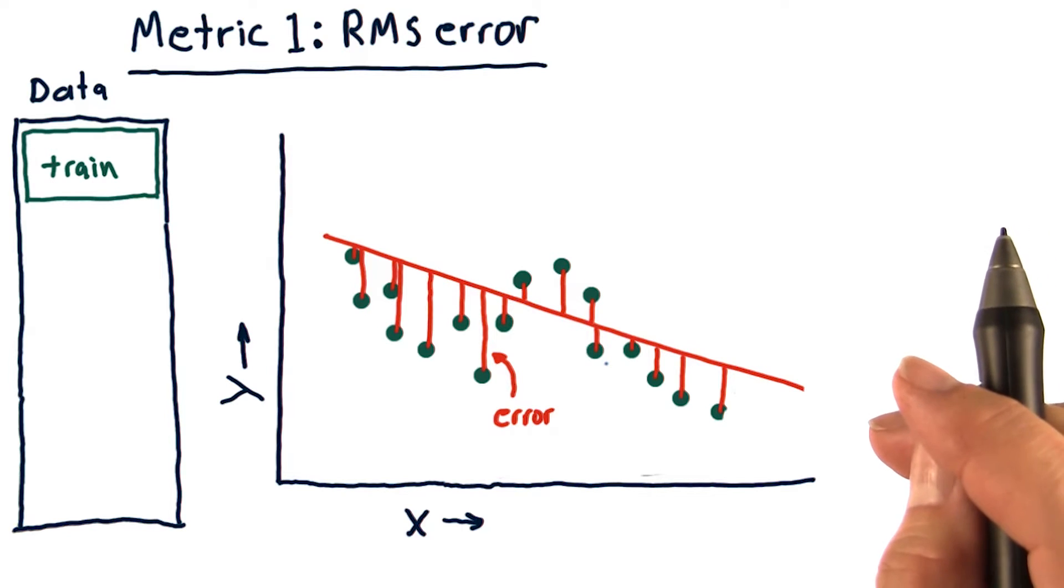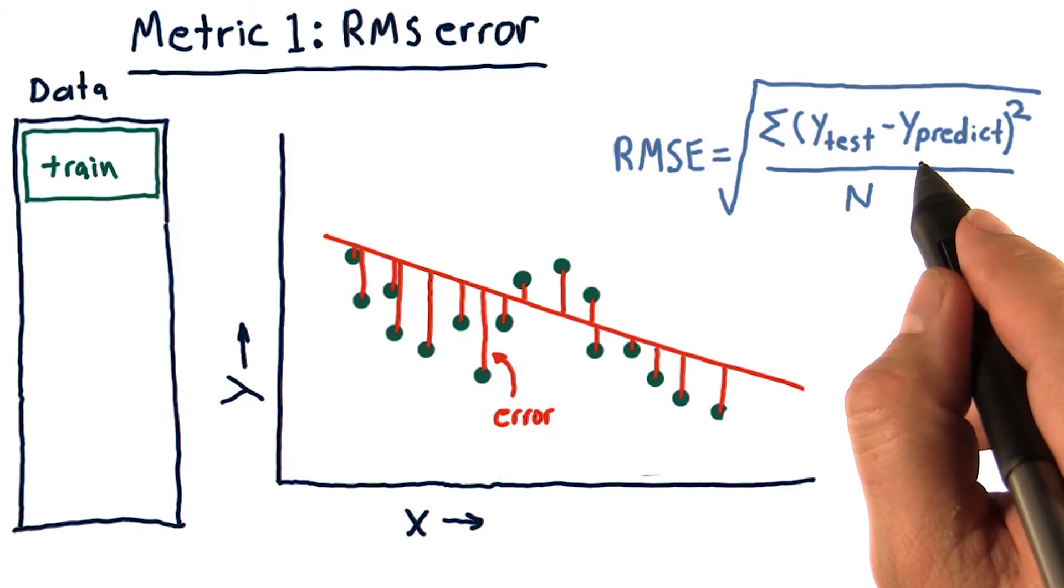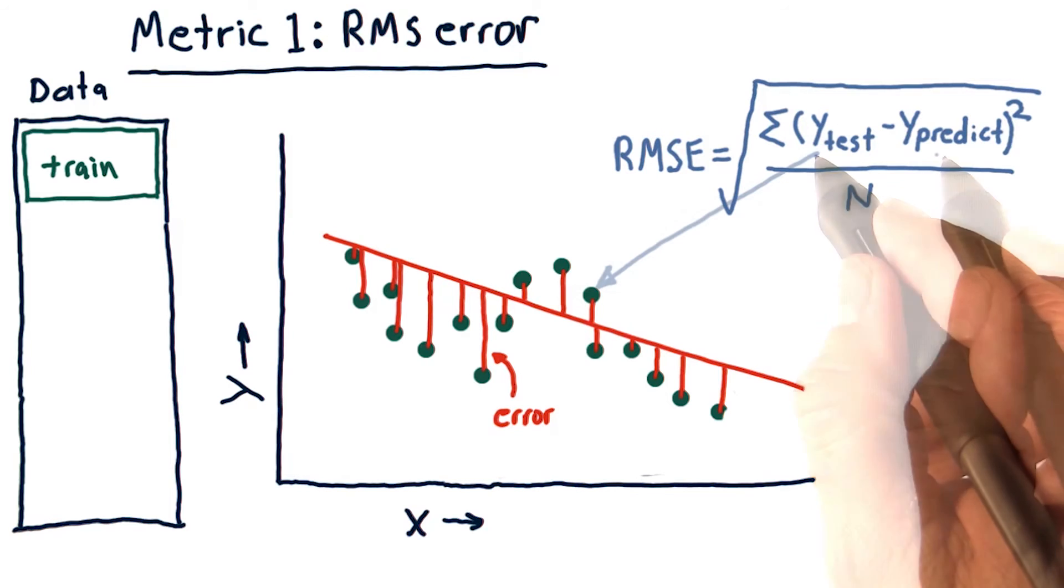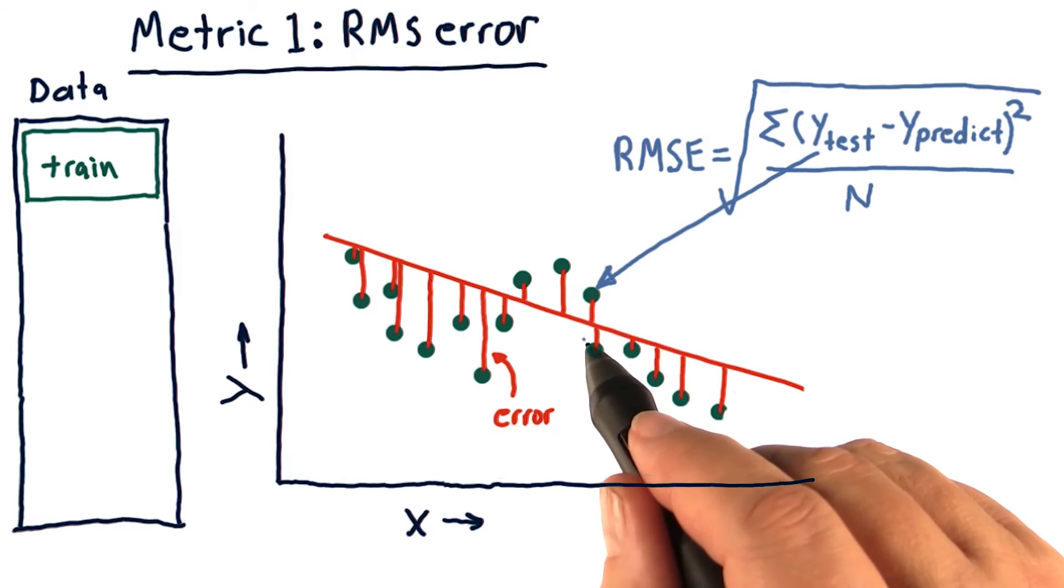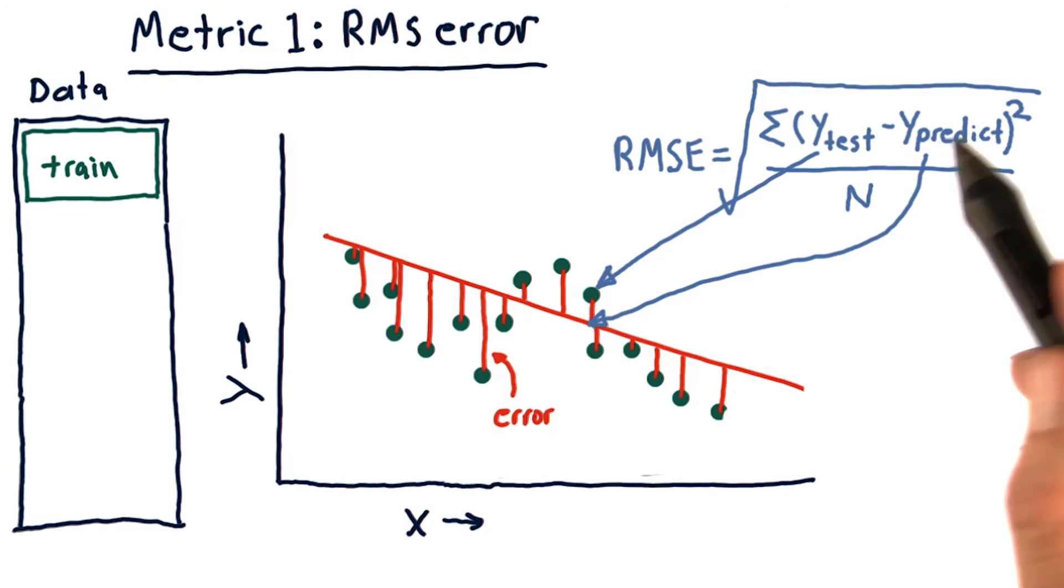So that sounds kind of complicated, but here's what it looks like. Y test minus Y predict. So Y test are the actual values of the data. Y predict are what our model predicted. We take that difference at each point, that's this difference, square it,